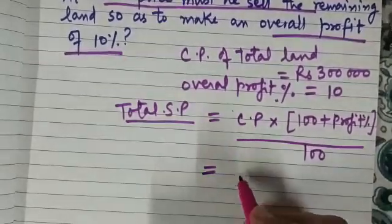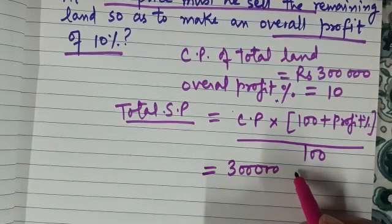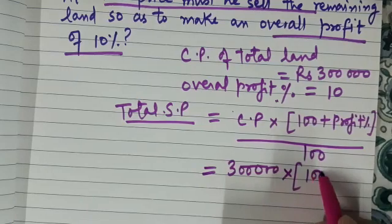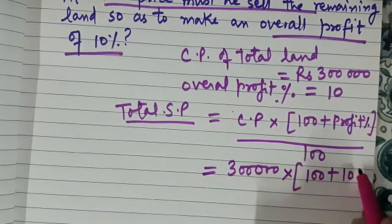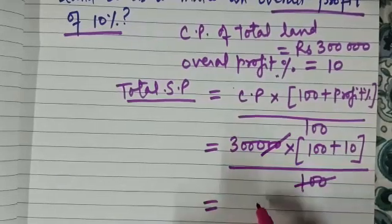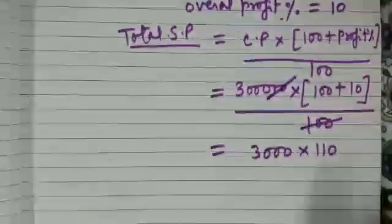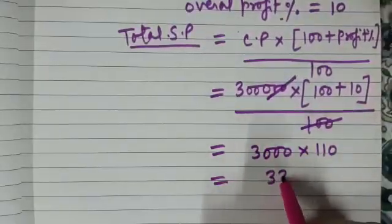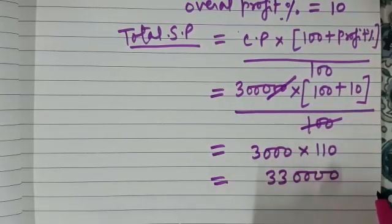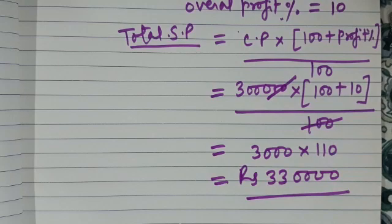Let us put the values. We have 3 lakhs into 100 plus profit percent, overall profit percent is 10 upon 100. These two zeros get cancelled. So if you multiply, what do you get? 3 lakhs 30,000. That will be the total selling price after overall gain of 10 percent. This is step one.